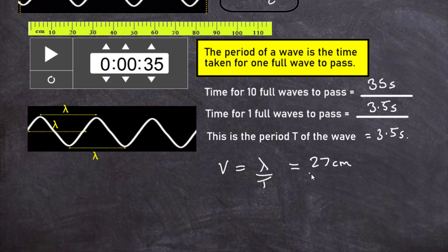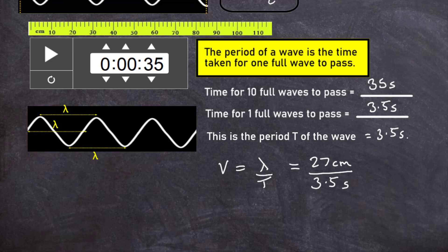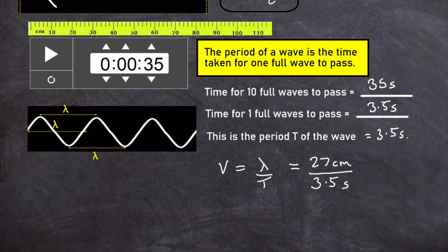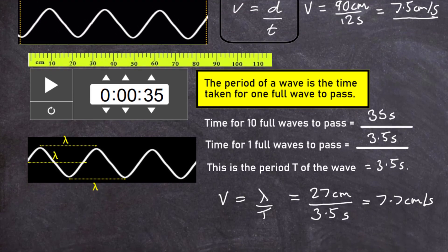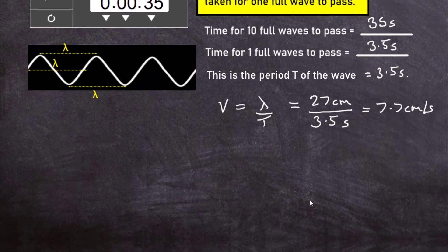The wavelength is 27 centimeters and the period is 3.5 seconds. A full wave of length 27 centimeters passes in one period of 3.5 seconds. So: 27 divided by 3.5 gives us 7.7 centimeters per second — very close to our original measured speed of 7.5 centimeters per second. The small difference is likely due to a timing error.